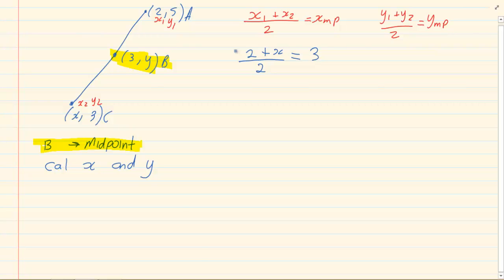Now let's solve for x. So we are going to times by 2. So we have 2 + x = 6. x is equal to 4, because we are taking the 2 over and subtracting.